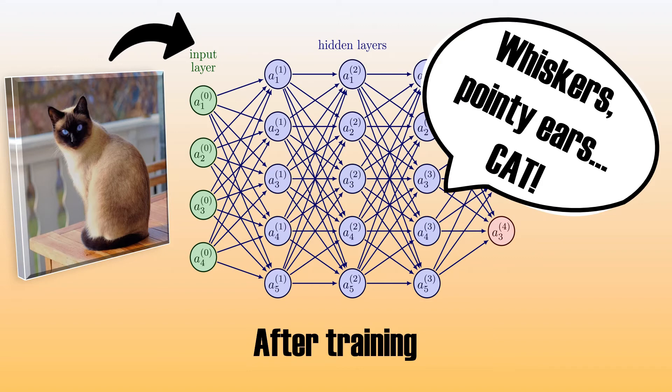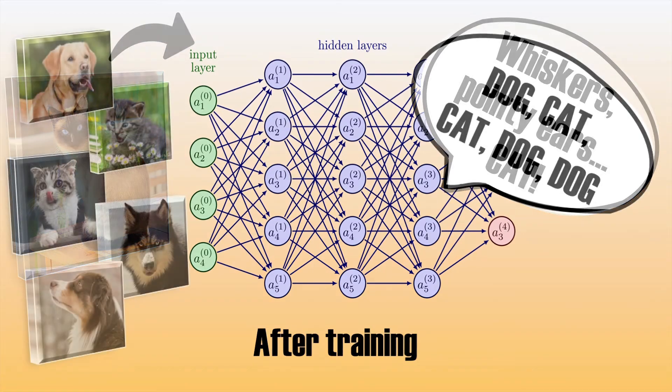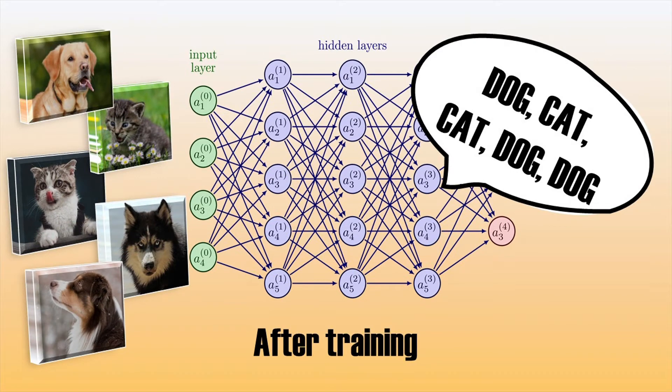Eventually, the network will be able to predict whether a picture is a cat or a dog based on the features it used to learn. So when presenting new images of cats and dogs, it should be able to identify which of the two animals it is.